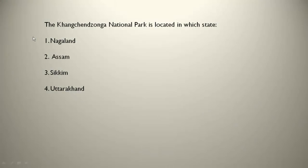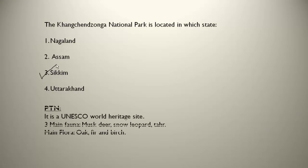The Khangchendzonga National Park is located in which state? It is in Sikkim, and it is also a UNESCO World Heritage Site. The three main fauna are musk deer, snow leopard, and tahar. The main flora are oak, fir, and birch trees.